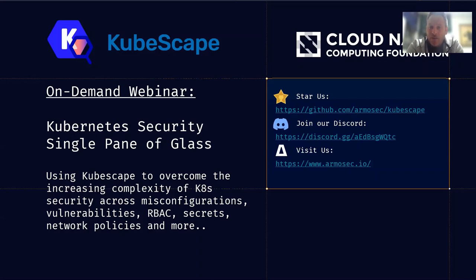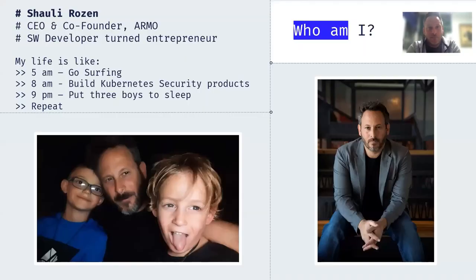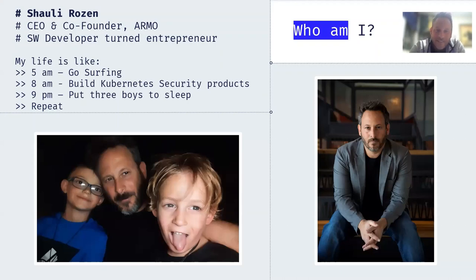We will be happy if you star us on GitHub. KubeScape is a fast-growing project and we would love you to take part of it. You can join the discussion on our Discord, or visit us on our website to learn more about KubeScape and our roadmap. Just a little bit about myself — my name is Shauli, I'm the CEO and one of the co-founders of Armo, a software developer turned entrepreneur. I wake up in the morning and go surfing, then build Kubernetes security products for the rest of the day, put my three kids to sleep and repeat.